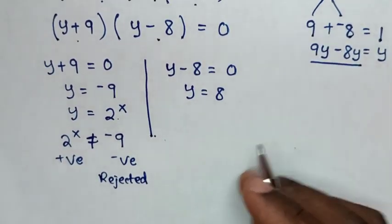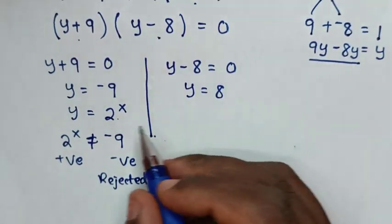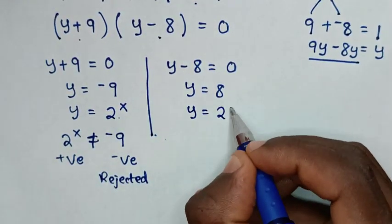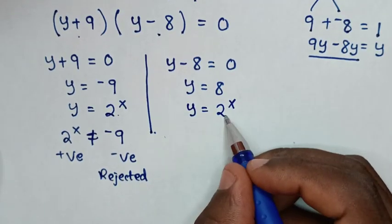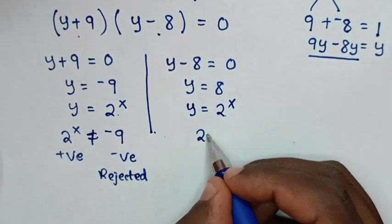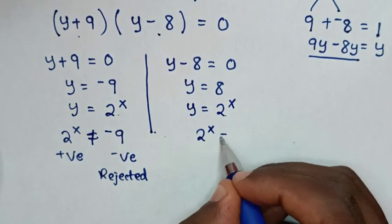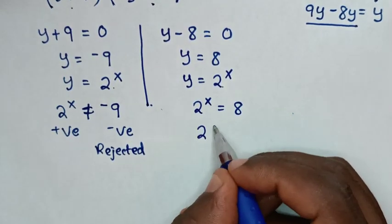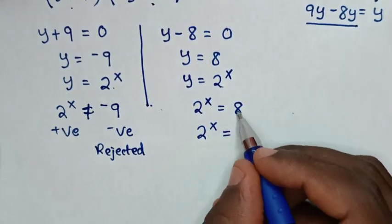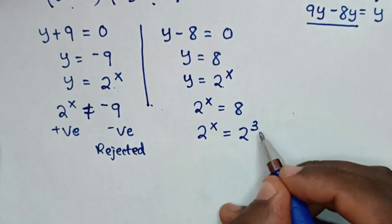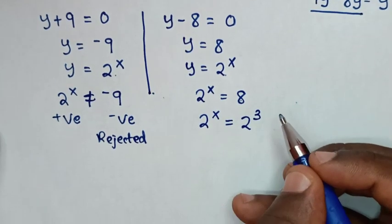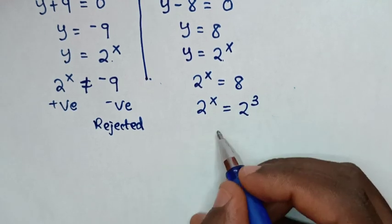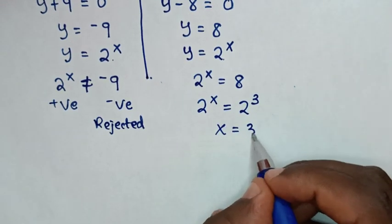Then from the other solution, we substitute the value of y, which is equal to 2 power x. So 2 power x is equal to 8. Then 8 is the same as 2 power 3. Now because we have the same base, we compare the powers. So x is equal to 3.